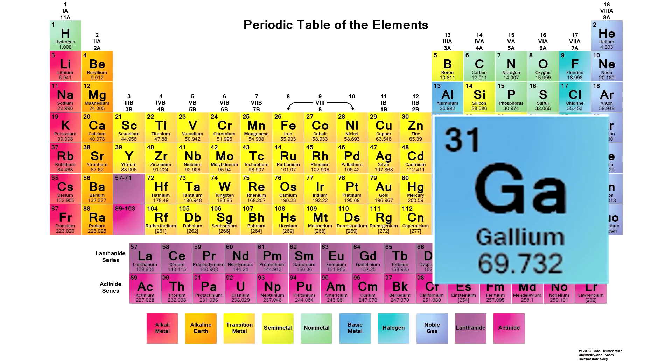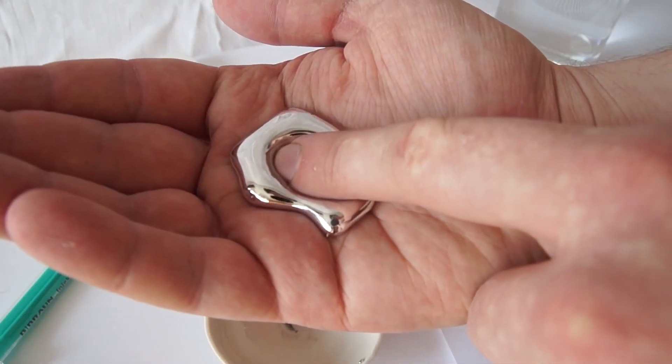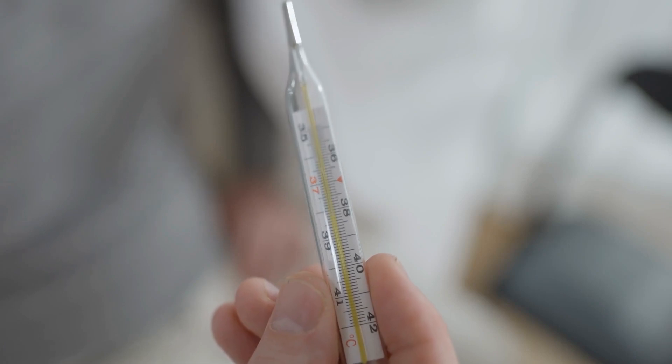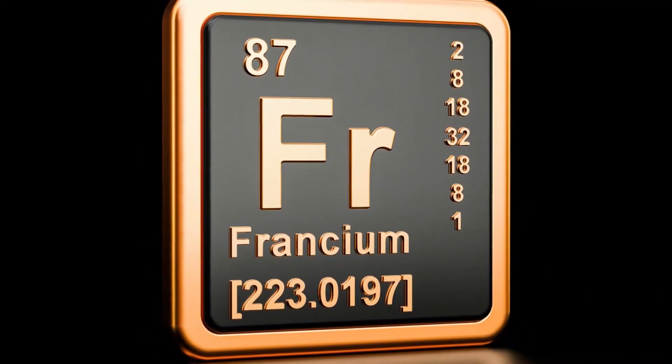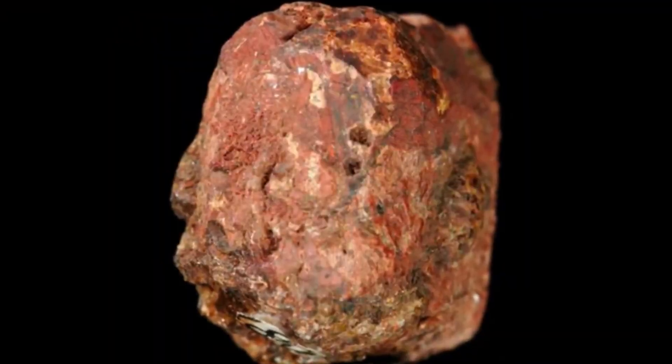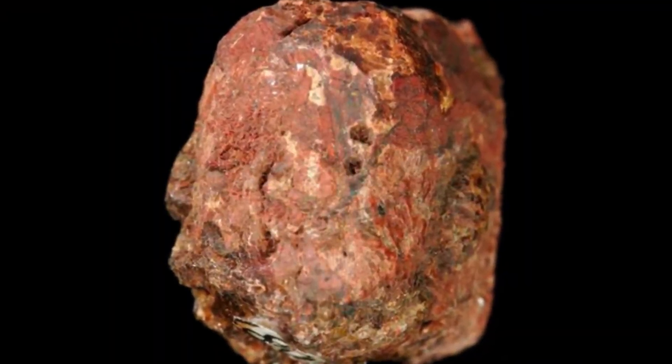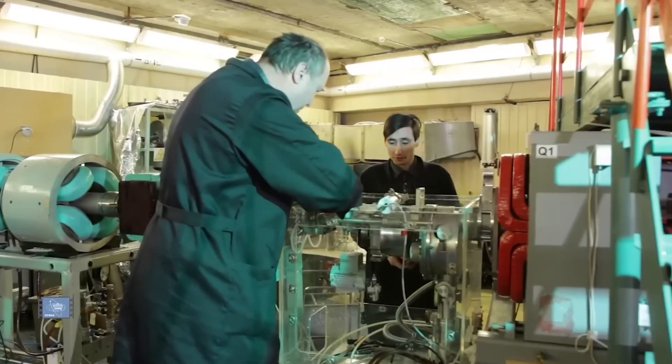Gallium is another intriguing element. It melts in your hand at just above room temperature, making it useful in thermometers and as a non-toxic alternative to mercury. On the contrary, francium is exceedingly rare and highly radioactive, so unstable that it doesn't exist naturally and has a half-life of only 22 minutes.